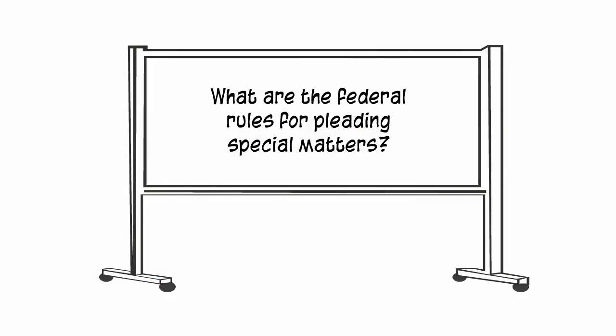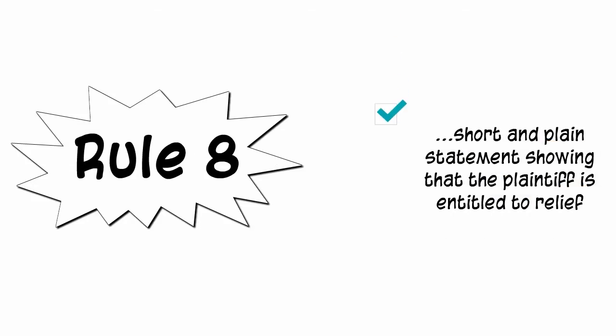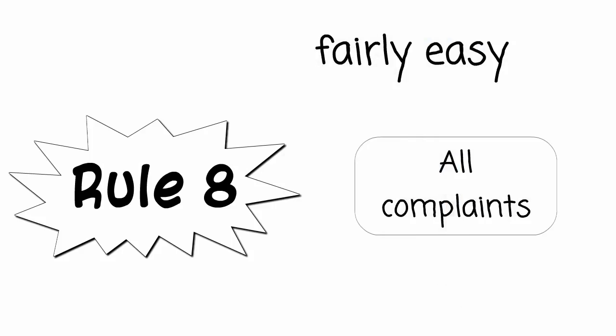In this video, we will discuss Rule 9, the Federal Rule for Pleading Special Matters. Remember, Rule 8 of the Federal Rules of Civil Procedure applies to all civil litigation in the federal courts. So our starting point for every complaint is that it must include a short and plain statement showing that the plaintiff is entitled to relief. All complaints in federal court have to comply with that relatively easy standard.